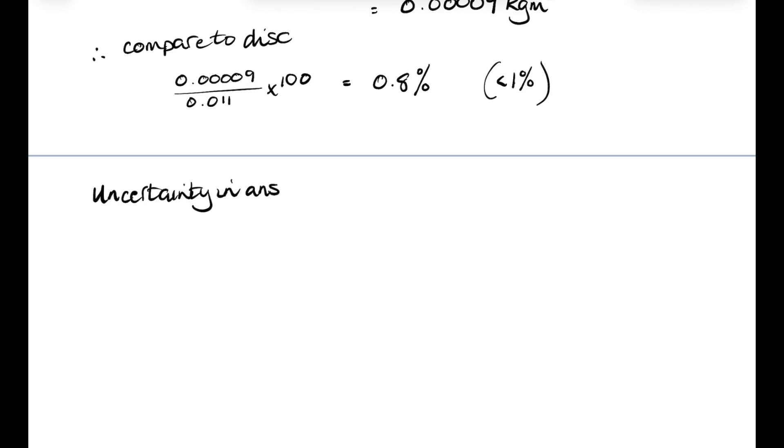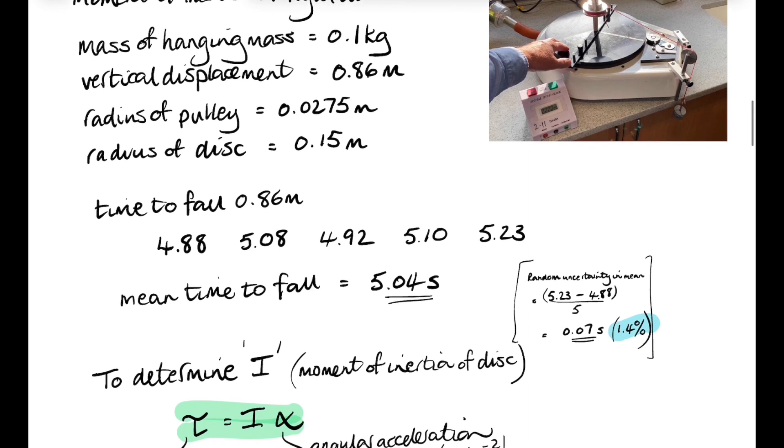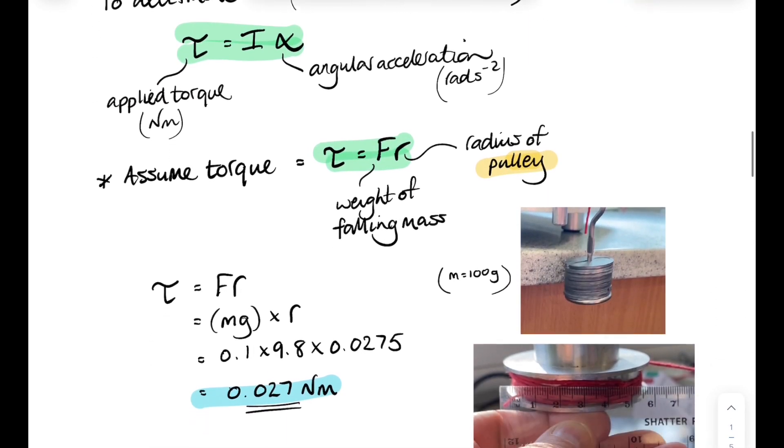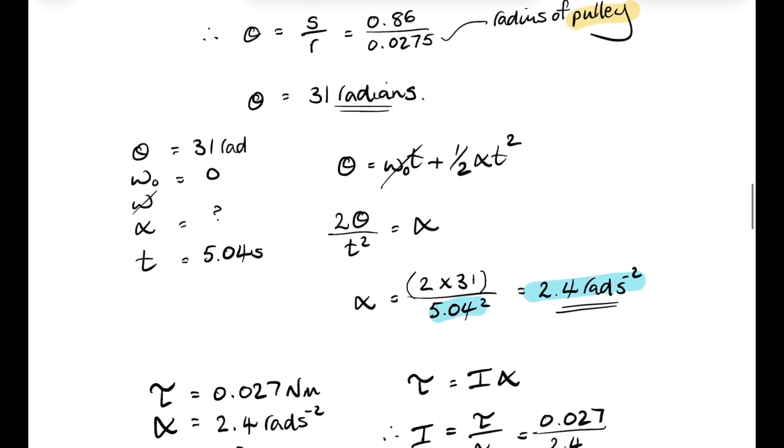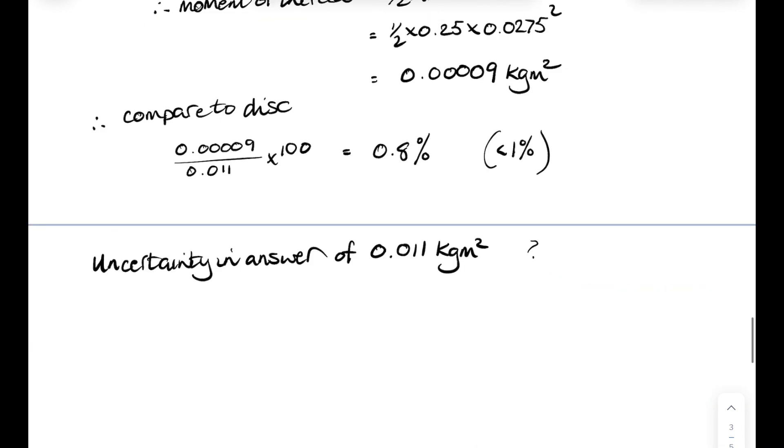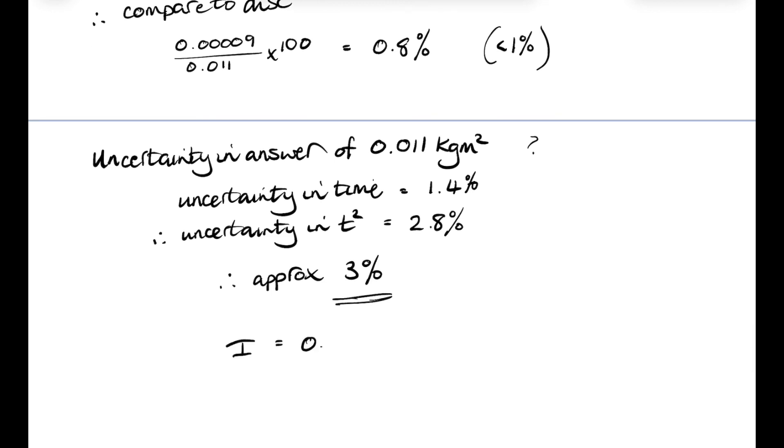The biggest uncertainty in our answer of the moment of inertia of the disk is in our measured time. Remember, it was 1.4%. But when we used that time to work out the angular acceleration of the disk, then the time in that relationship was squared. And when you square the time, you should really double the uncertainty. So if the uncertainty in the time was 1.4%, then the uncertainty in t squared will be 2.8%. So approximately 3% then. So in conclusion, there's our moment of inertia of the disk with a very rough uncertainty of about 3%.